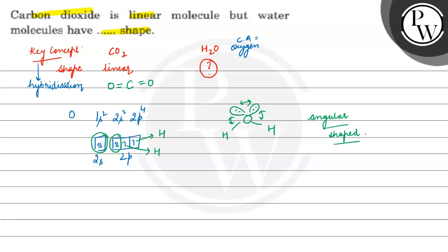Therefore, the answer of this question is water molecules have bent or angular shape. Hope you understood this question well. All the best.